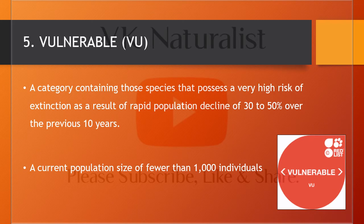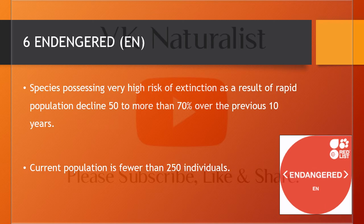Number five is Vulnerable, or VU — a category for species which possess a very high risk of extinction due to rapid population decline of 30 to 50 percent over the previous ten years, and whose current population is fewer than 100,000 individuals. Number six is Endangered, or EN — species possessing a high risk of extinction with a rapid decline in population and a current population fewer than 250 individuals.